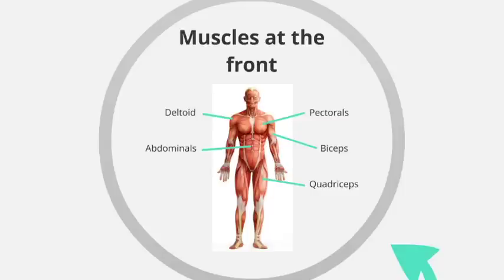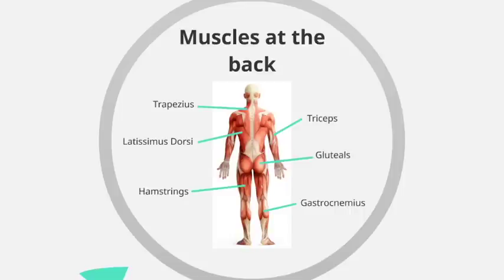It's important that as well as knowing the names of these muscles, you know exactly where they are located. Moving on to the muscles at the back of the body: the trapezius, located at the top of the back between the shoulder blades; the latissimus dorsi, located lower down the back; the triceps, at the back of the upper arm; the gluteals, in the buttocks; the hamstrings, at the back of the upper leg; and finally the gastrocnemius, commonly known as the calf, located in the lower leg.